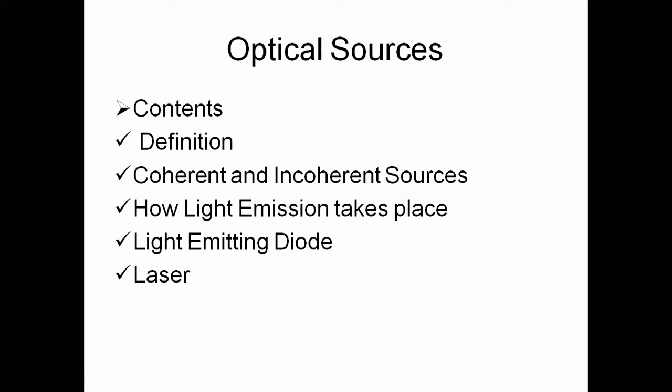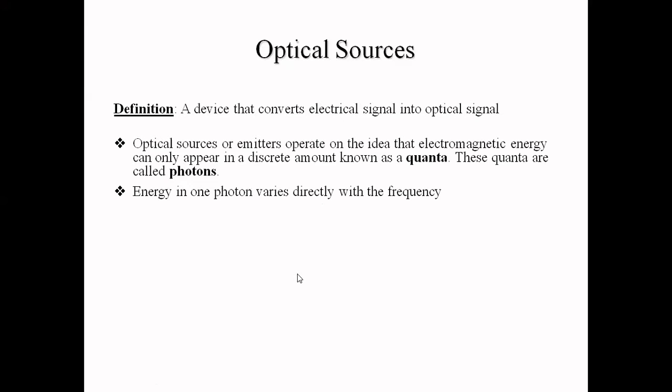In today's lecture we will understand what is the meaning of coherent and incoherent sources. Next we will discuss how light emission takes place. Then we will come to optical sources like the light emitting diode — its construction, how it works, and its internal structure. Then we will cover laser and its internal structure and how it works.